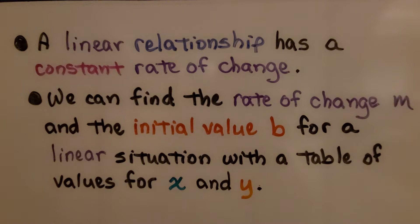A linear relationship has a constant rate of change. We can find the rate of change m and the initial value b for a linear situation with a table of values for x and y.